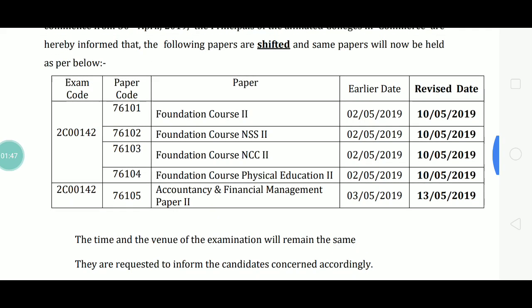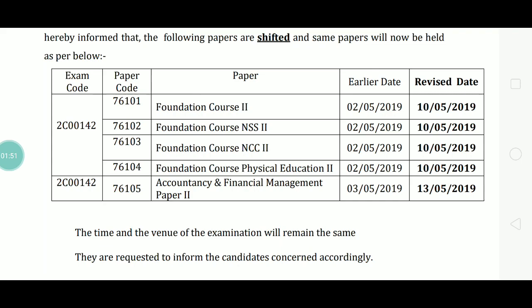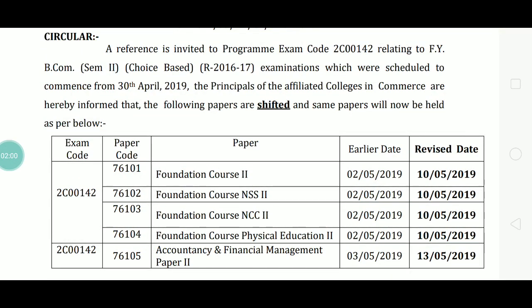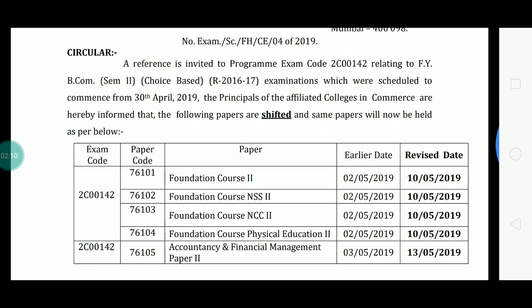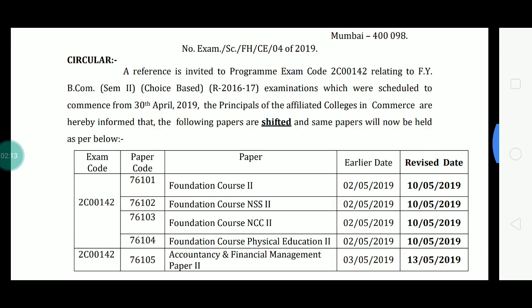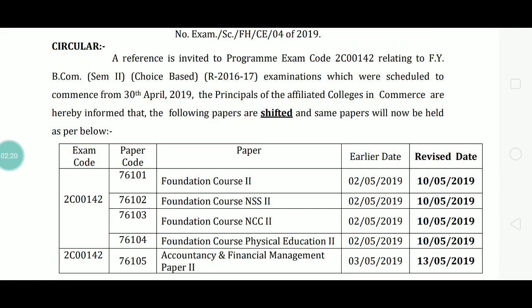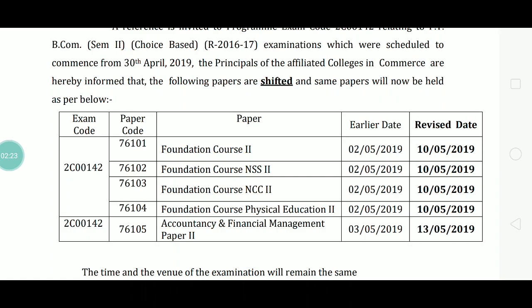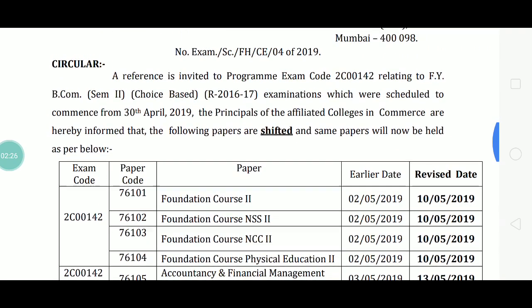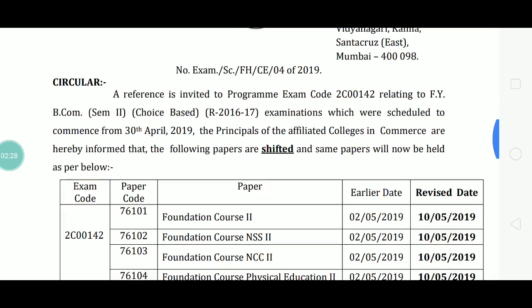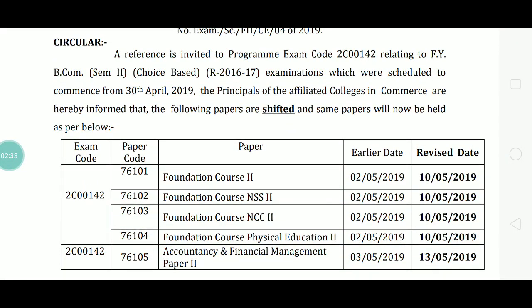With both the 2nd May and 3rd May papers postponed, your exam will now start from 4th May 2019. Don't get confused — this is not IDOL; this is the choice-based exam which is 100 marks from college. The two postponed papers are now on 10th May and 13th May respectively. Check the university website for more clarification.